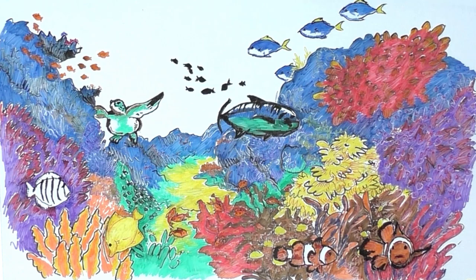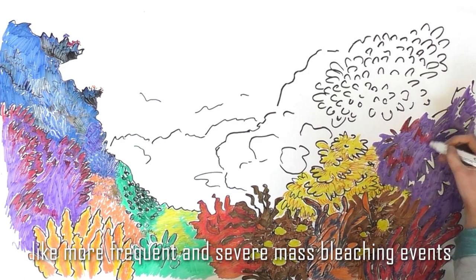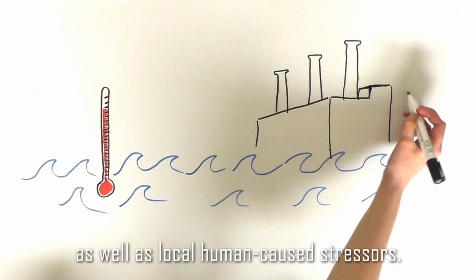Coral reefs are among the most diverse and complex ecosystems in the world, but reefs worldwide are facing increasing pressures like more frequent and severe mass bleaching events caused by warming seas as well as local human-caused stressors.